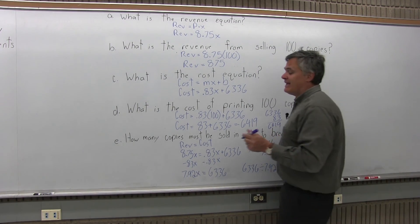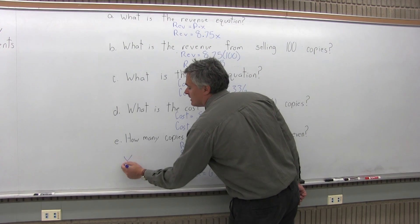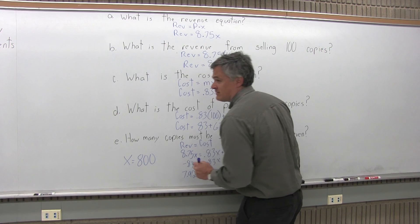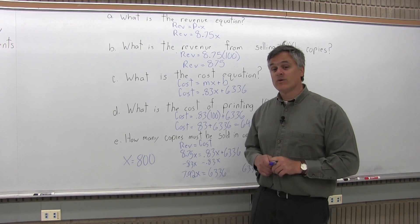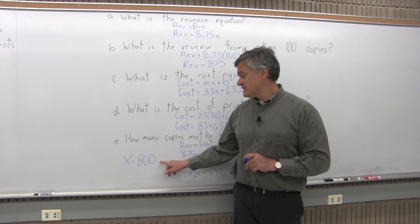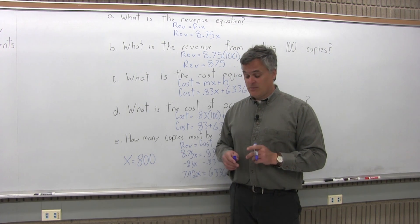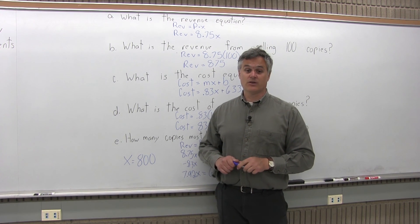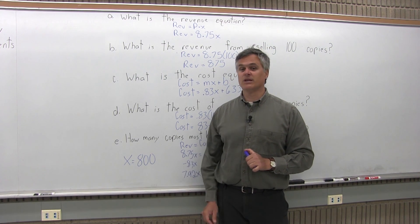That means you have to sell 800 copies of the Lizzie Borden Quarterly in order to break even. At that point you walk away with a profit of zero, which is not your goal at all. You want to sell a lot more than 800. At least 800. Less than 800, you'll take a loss, and more than 800, you'll make a profit. 800 is where you break even.